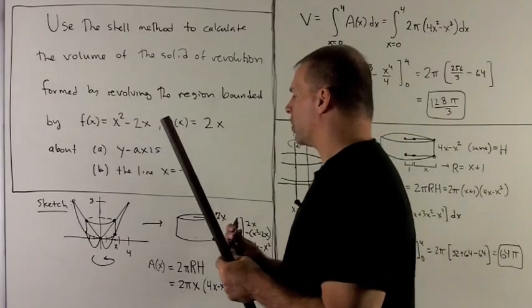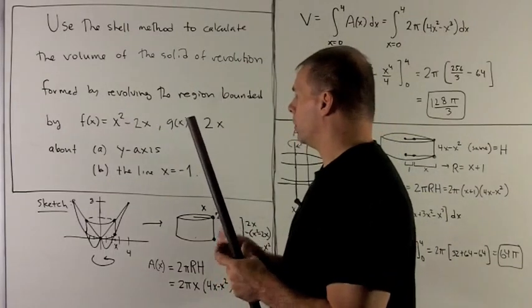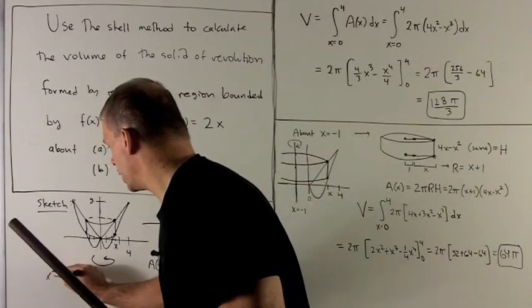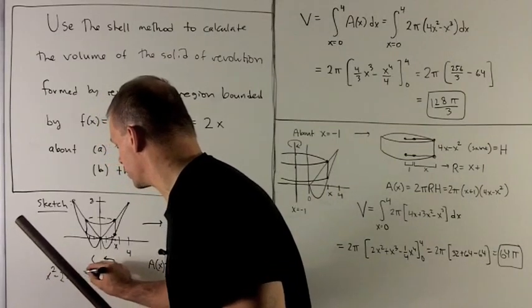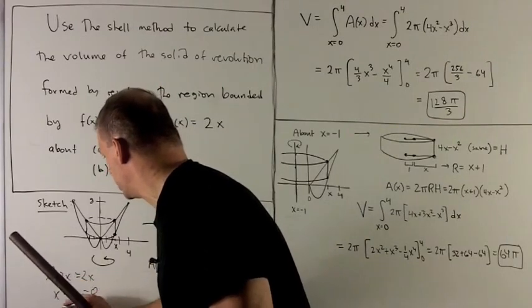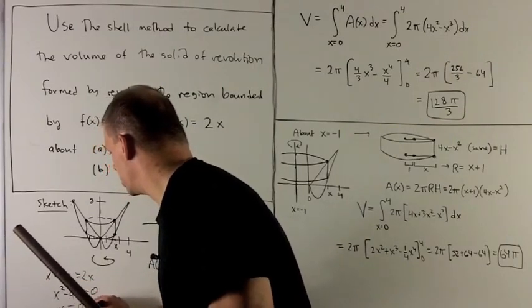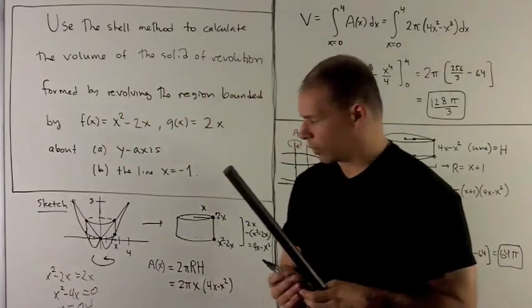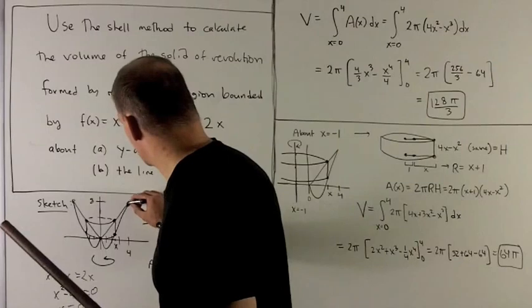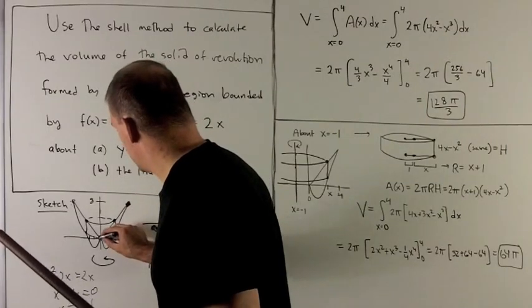First thing I should do is figure out where the two graphs intersect. So that's just x² - 2x equals 2x, or x² - 4x equals 0. So they'll agree at 0 and 4.